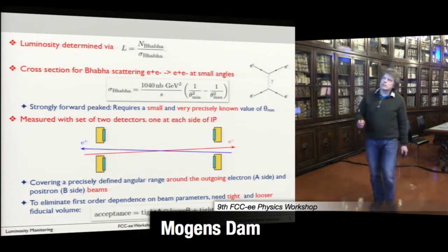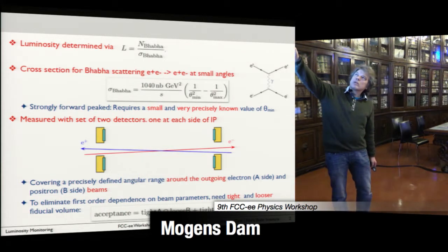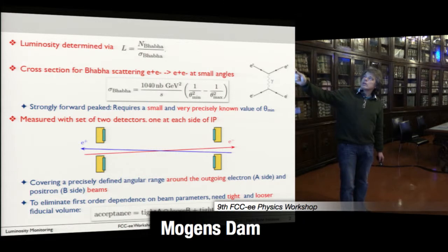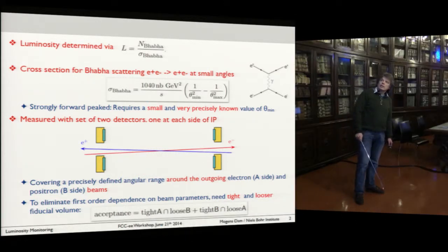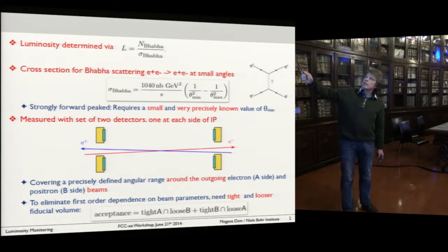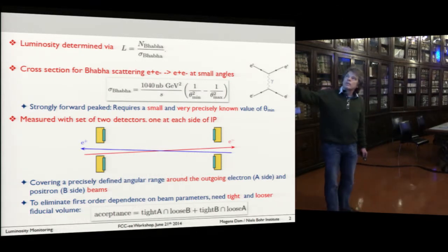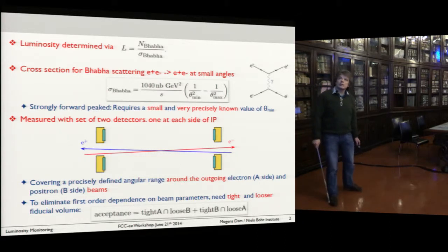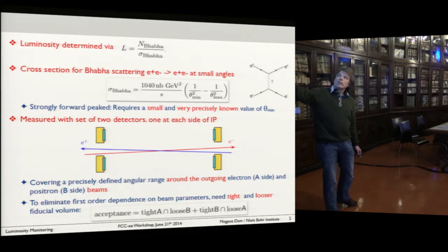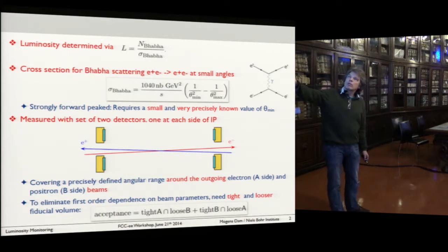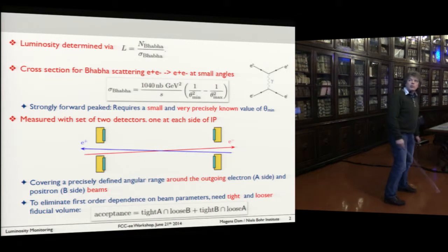I remind us that the luminosity is determined by Bhabha scattering — it's just the number of events divided by the theoretical cross-section. The Bhabha scattering, elastic e+ e- scattering, is dominated by the t-channel photon exchange, and the cross-section formula depends on one over theta_min squared. Since theta_min is considerably smaller than theta_max normally, you have a very dramatic dependence on the minimum scattering angle, which means that if you want a large cross-section you want theta_min to be small, but to get a precise cross-section you also need it to be extremely precisely known.